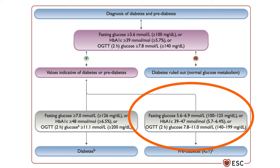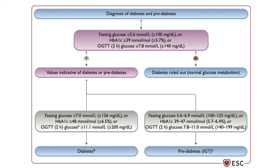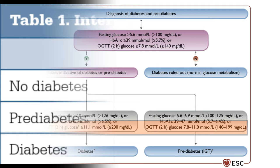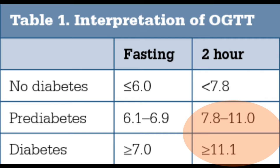If both the hemoglobin A1c and the fasting glucose levels are in the diabetes range, then the person has diabetes and there's no need to repeat the tests even if the patient is asymptomatic. If the two results do not match up, it's a good idea to repeat the test that came as diabetic, or get an oral glucose tolerance test, which is the most reliable way to diagnose diabetes when hemoglobin A1c and fasting blood glucose are not matching.